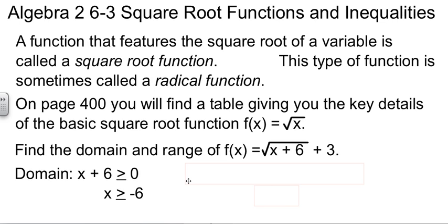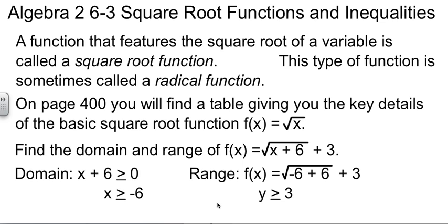The range, we know the square root is going to be a positive thing or 0. It's not going to be a negative value. Anything 0 and up added onto 3 tells me the range is y is greater than or equal to 3. If we put in the negative 6 from the domain, negative 6 plus 6 is 0. Square root of 0 is 0, plus 3. y has to be bigger than or equal to that value. So finding domain and range is pretty straightforward.